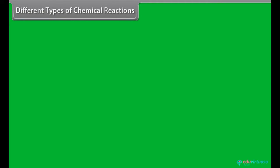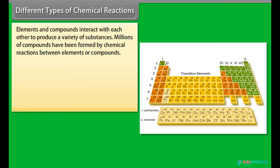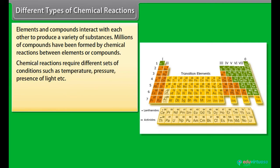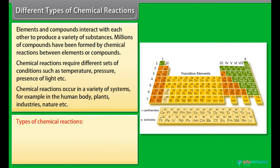Different types of chemical reactions: Elements and compounds interact with each other to produce a variety of substances. Millions of compounds have been formed by chemical reactions between elements or compounds. Chemical reactions require different sets of conditions such as temperature, pressure, presence of light, etc. Chemical reactions occur in a variety of systems, for example in the human body, plants, industries, nature, etc. Types of chemical reactions: Combination reaction, Decomposition reaction, Displacement reactions, Double displacement reactions.